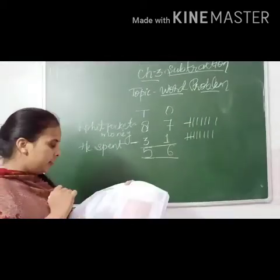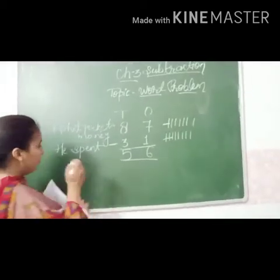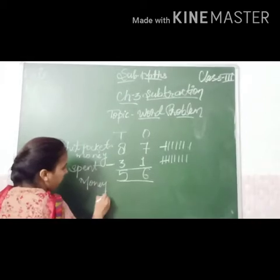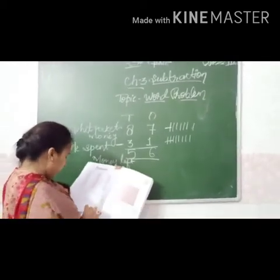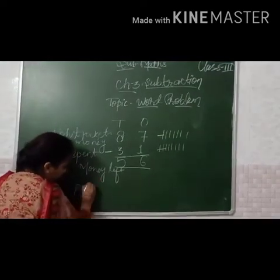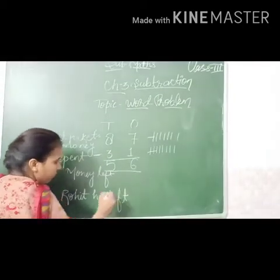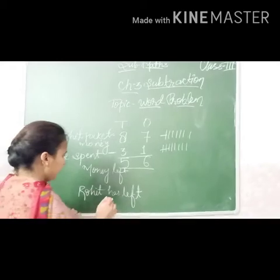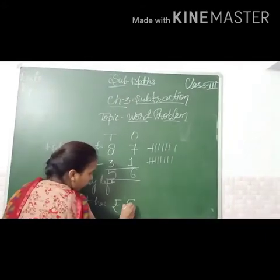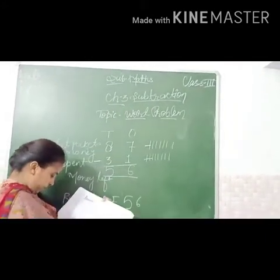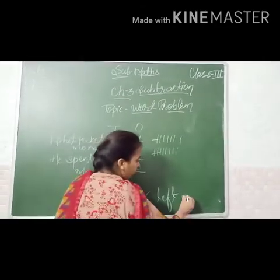So Rohit ke paas ab kitna rupees, kitna amount left ho gaya? The money left — how much money is left? Kitni money bachi hai? 56. So the answer is, Rohit has Rs. 56 left. Rupees ka sign lagayenge — Rs. 56. Ab uski total amount jo hai kitna left ho gaya? 56.